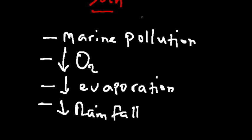Pollution of water by crude oil can lead to marine pollution. A key concept to understand is that water and oil are immiscible, so oil tends to flow on the surface of water when we try to mix them together. This oil covering the surface of the water can lead to a decrease in oxygen content, and in this scenario the aquatic lives will be unable to respire.